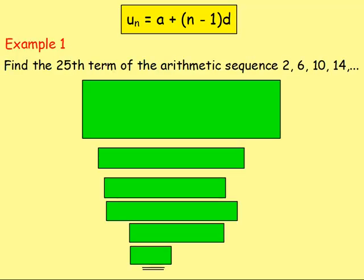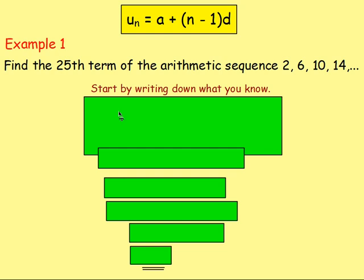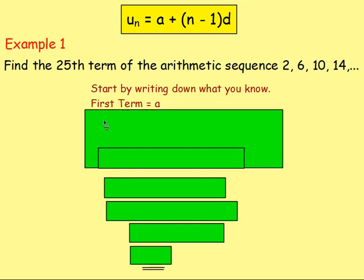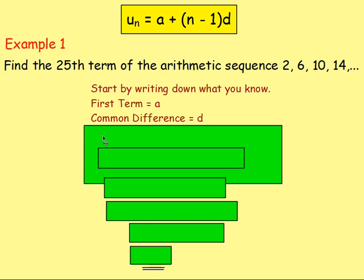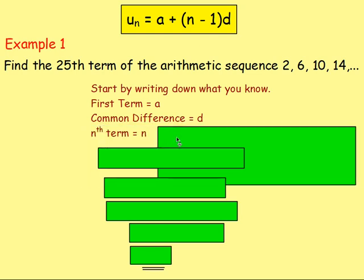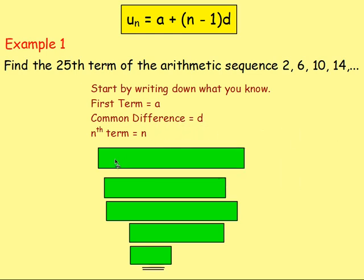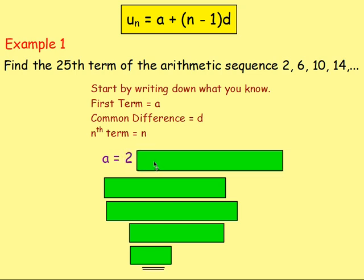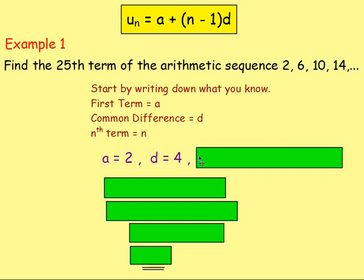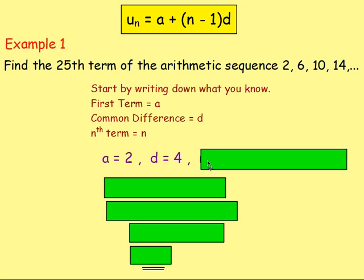Let's try some examples. Example 1: find the 25th term of the arithmetic sequence 2, 6, 10, 14, and so on. For any of these questions, I like to start by writing down what I know. If you know the first term — a — write it down. If you know the common difference — d — write it down. If you know which term you want — n — write it down. So for this one: a is the first term, which is 2. d, the common difference, we're going up in 4, so d is 4. And n is 25, because we want the 25th term.